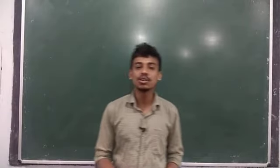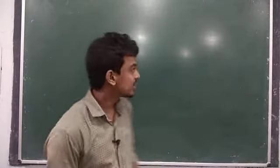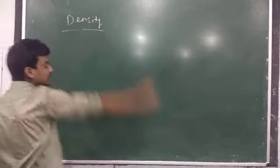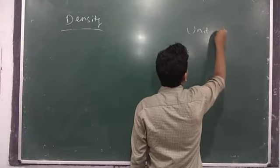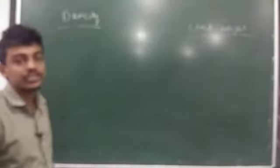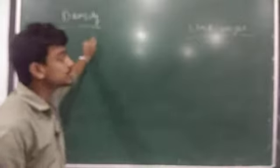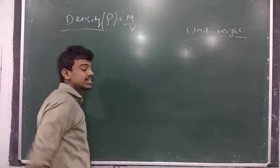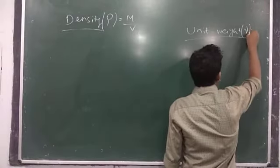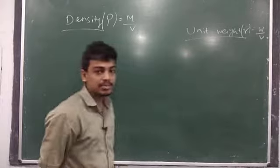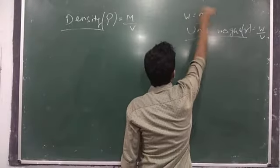In this class we study different terms related to density and unit weight. I'm writing density on one side and unit weight on the other side so there will be no confusion. Density is denoted as rho and equals mass by volume. Unit weight is denoted by gamma and equals weight by volume. The difference is: weight equals mass into gravity.